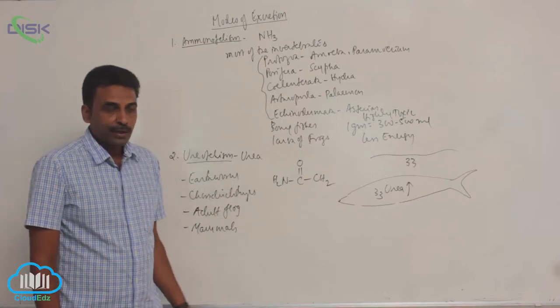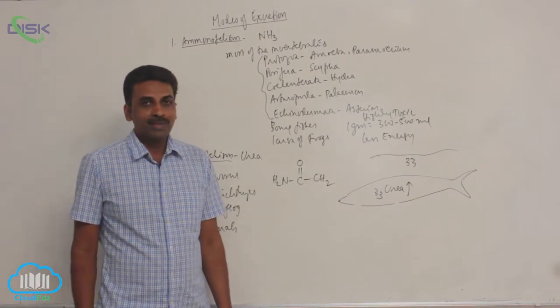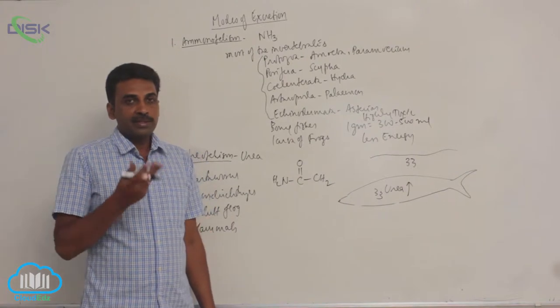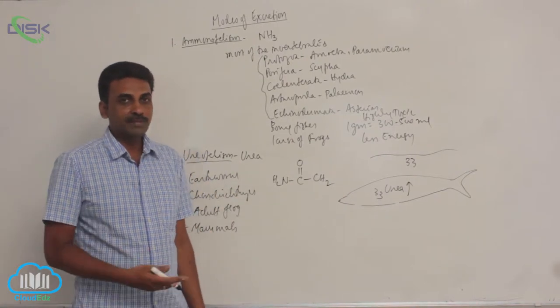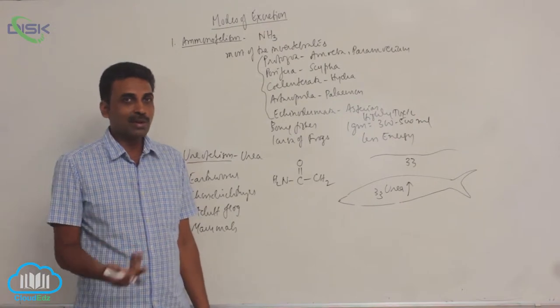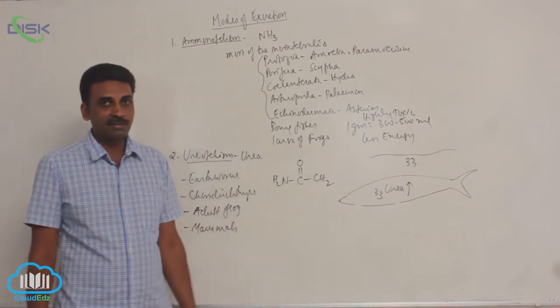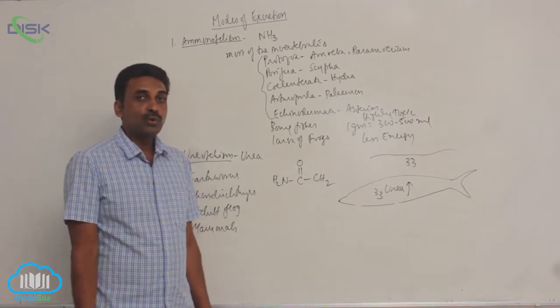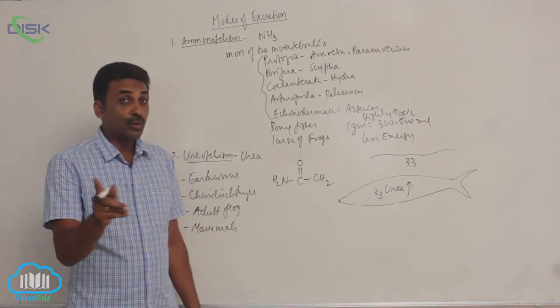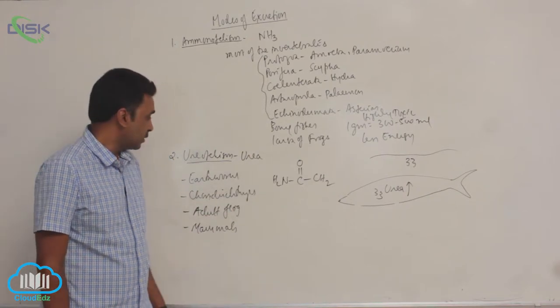Ureotelism is the excretion of urea by animals. The process of excreting urea is called ureotelism, and those animals which excrete urea are called ureotelic animals.